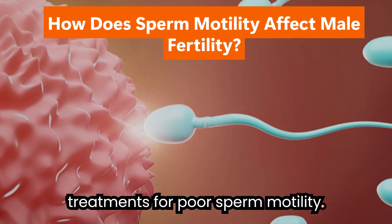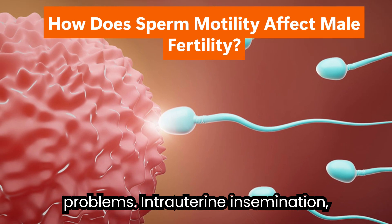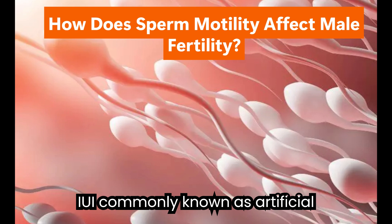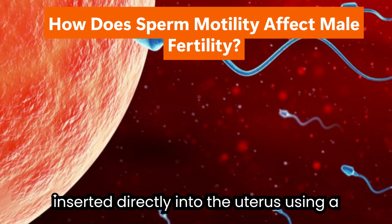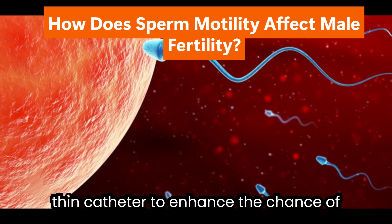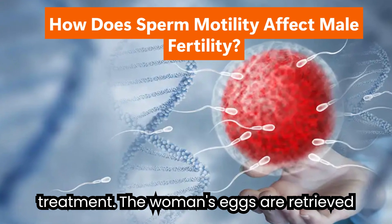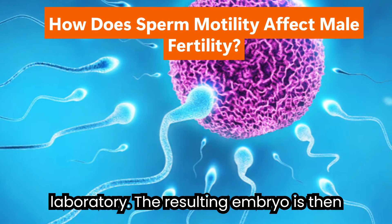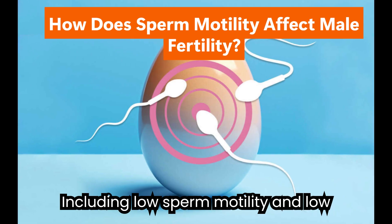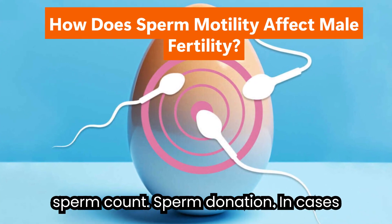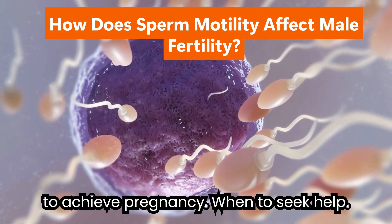Medical treatments for poor sperm motility: if lifestyle changes are insufficient, several options are available. IUI (intrauterine insemination), commonly known as artificial insemination, involves washing and concentrating sperm in a lab; the most motile sperm are selected and inserted directly into the uterus via a thin catheter. IVF (in vitro fertilization) is a more advanced treatment in which eggs are retrieved and fertilized with sperm in a laboratory, and the resulting embryo is implanted into the uterus — often recommended when multiple male infertility factors are present. In cases of severe motility impairment or genetic conditions, donor sperm may be used during IVF or IUI to achieve pregnancy.